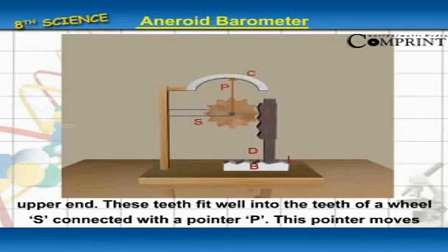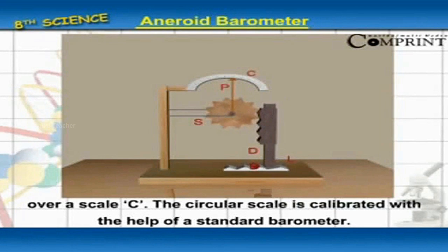This pointer moves over a scale C. The circular scale is calibrated with the help of a standard barometer.